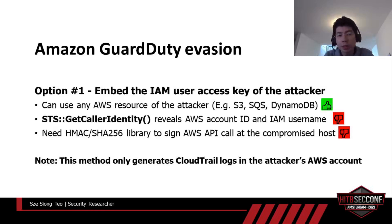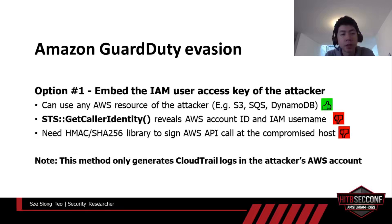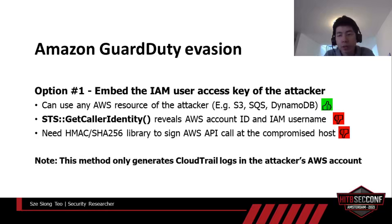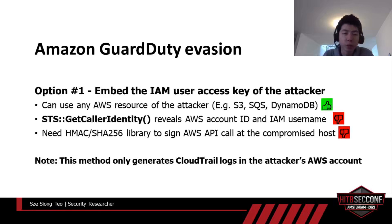The first option is to embed the IAM user access key of the attacker in the malware. This allows the use of any AWS resources like S3, SQS, DynamoDB, and so on. It is similar to many malware C&C channels, except the malware interacts with an AWS endpoint instead of an unknown IP address. The disadvantage is that if someone finds the access key in the backdoor code, they can use it to get the AWS account ID and IAM username, and immediately know it is a backdoor. Also, this method requires HMAC and SHA-256 to sign the API request, which is not ideal for a backdoor. On a side note, this method will not generate CloudTrail logs in the compromised host account, because it uses the attacker's access key.